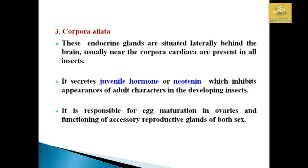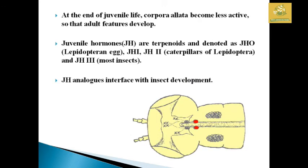The corpus allatum is situated laterally behind the brain, usually near the corpus cardiacum, and is present in all insects. It secretes juvenile hormone (JH), also known as neotenin, which inhibits the appearance of adult characters in developing insects. It is also important for egg maturation in ovaries and functioning of reproductive glands in both male and female insects. At the end of the larval life, the corpus allatum becomes less active so that adult features develop. The juvenile hormones are: JH0 in Lepidoptera eggs, JH1 and JH2 in caterpillars of Lepidoptera, and JH3 in most other insects.